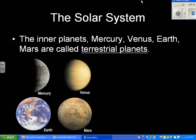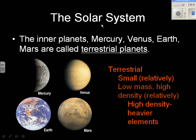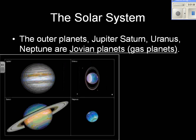The terrestrial planets are relatively small, have a low mass, and are high in density because they're composed of heavier elements such as silicon. So again, they're relatively small with low mass but high in density. Now the outer planets — the other four planets — are next.